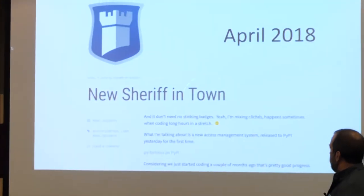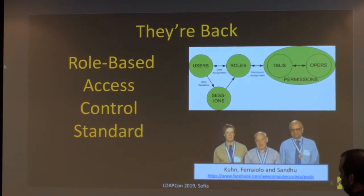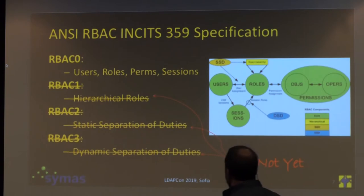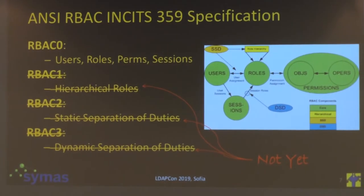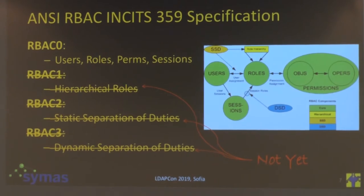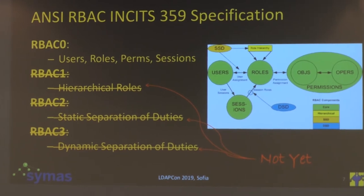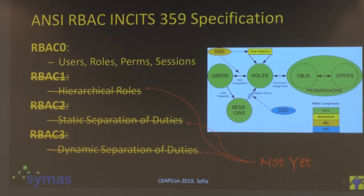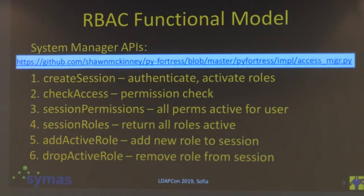I blogged about it. Back to that diagram of the fully compliant RBAC system — it doesn't do the full gamut; it just implemented RBAC zero. So just this set of APIs for RBAC zero: admin, review, and system APIs.